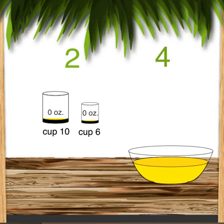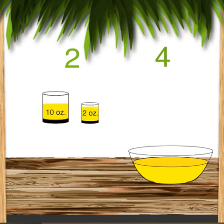There's only one possible way of getting to 2. We first would have to fill up the 6 cup, pour it into the 10 cup, fill up the 6 cup again, and then pour the 6 cup into the 10 cup once again, and have 2 left in the 6.